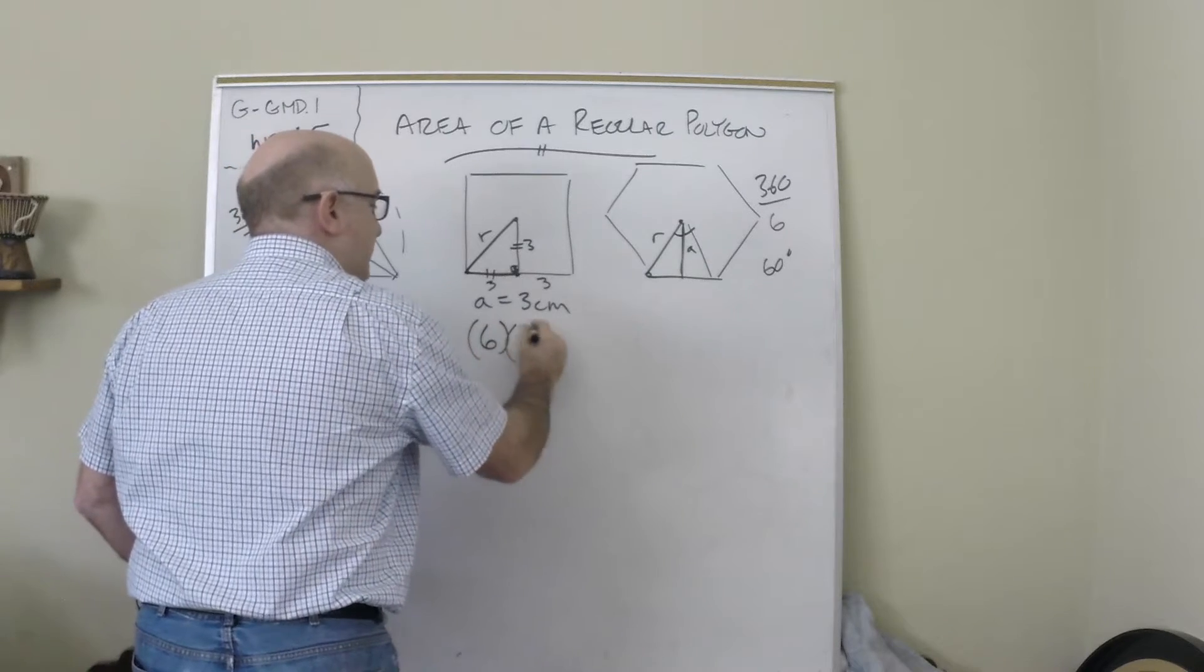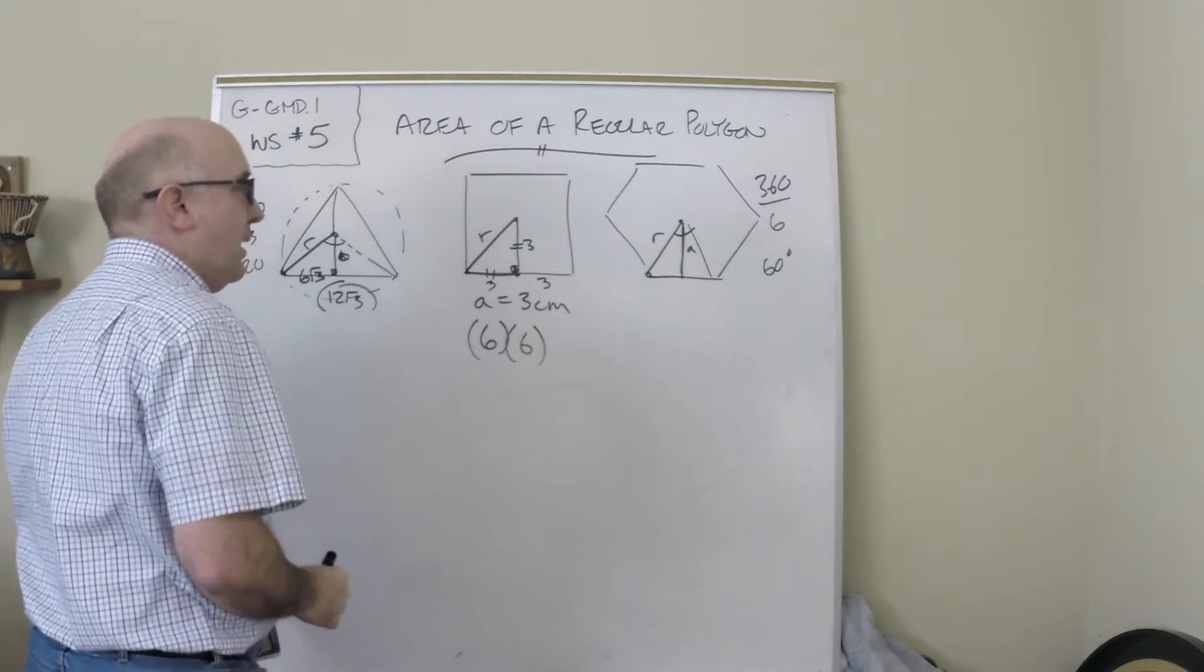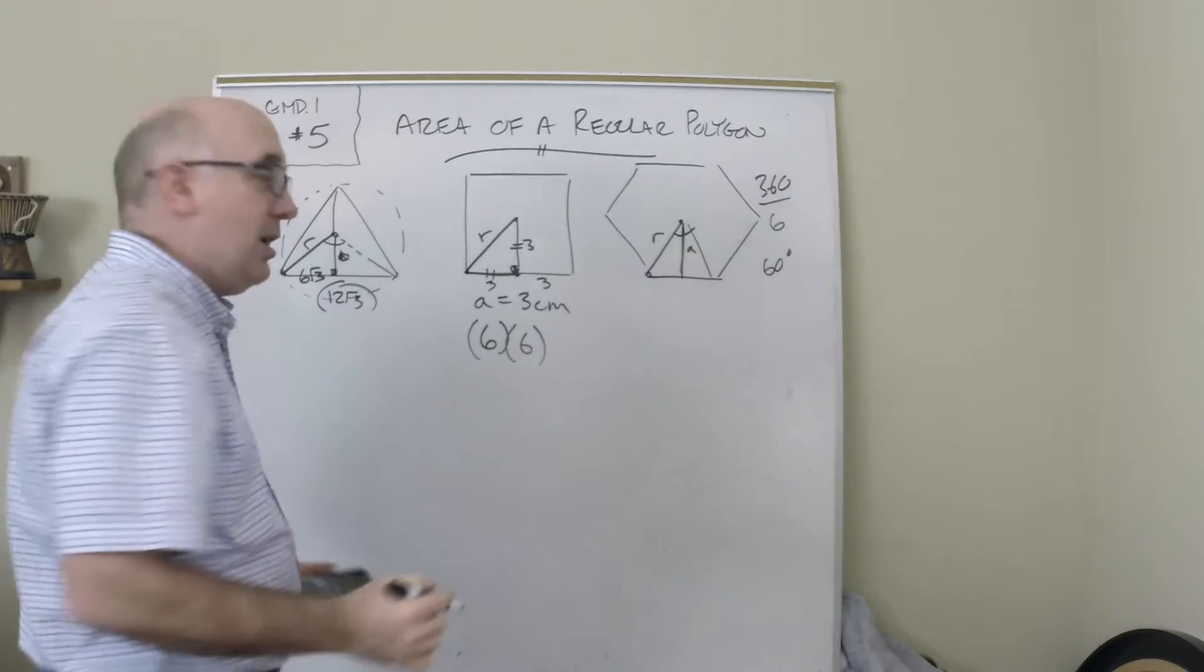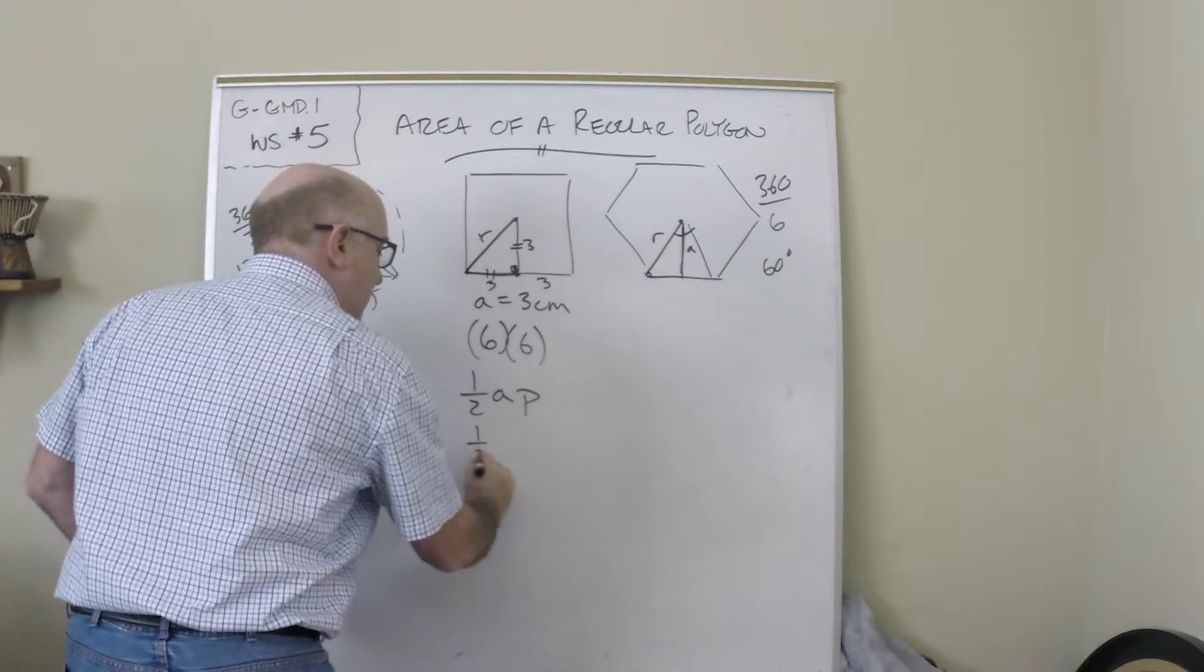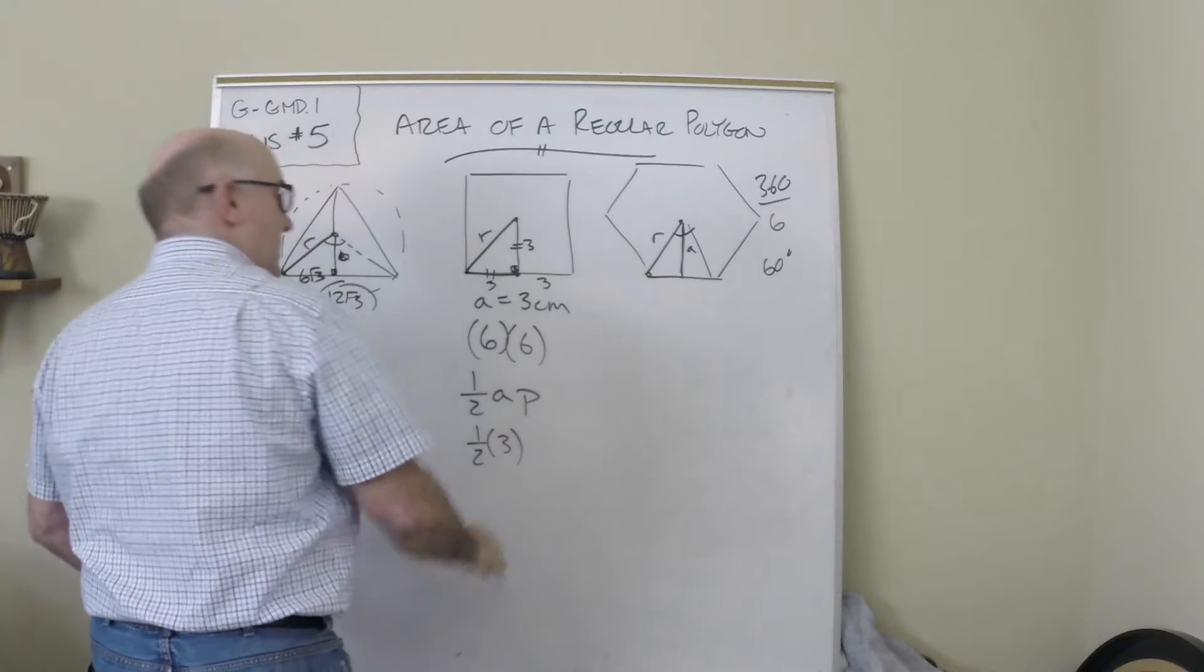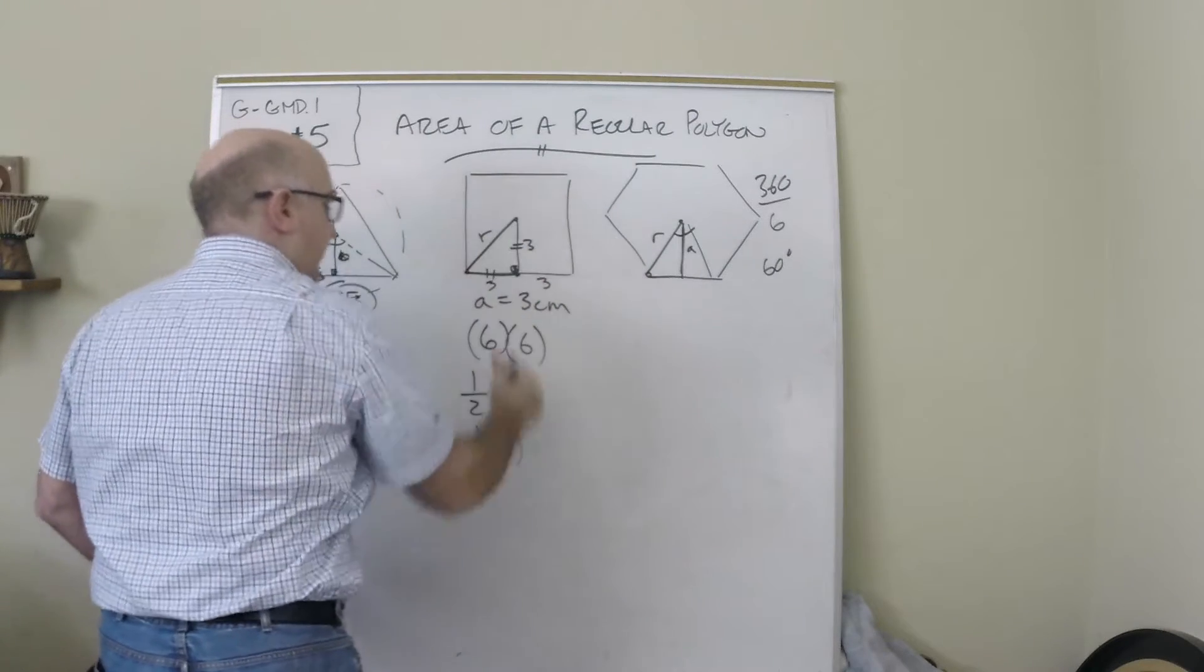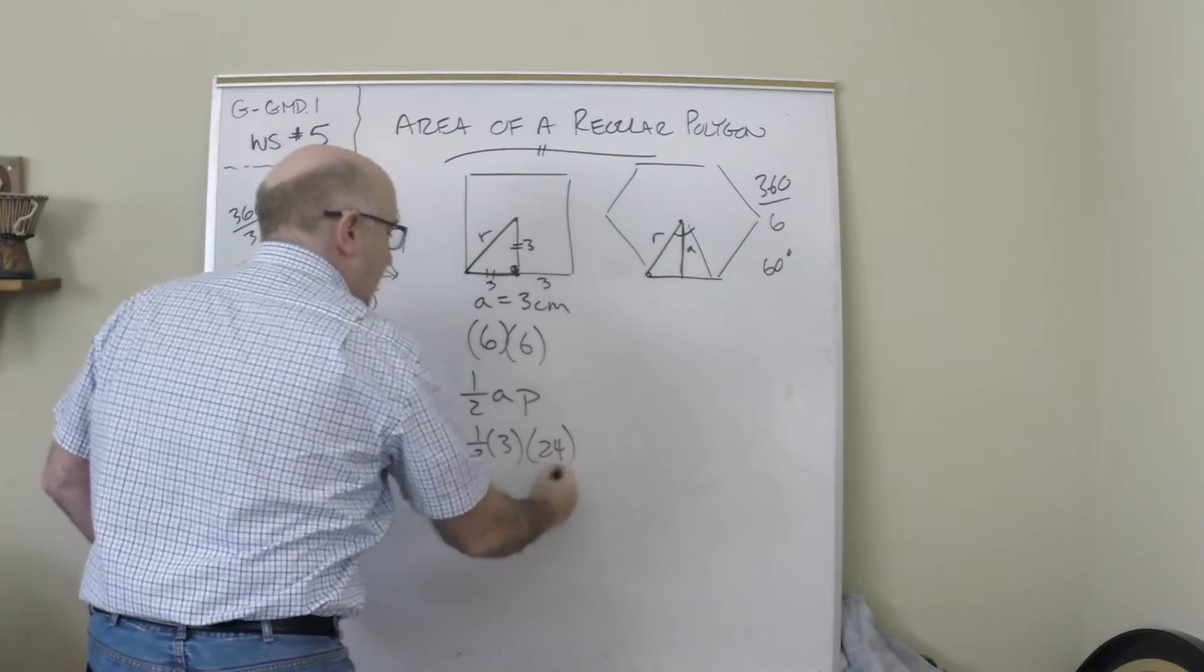But we can use our other formula, which is one-half the apothem times the perimeter. The apothem is 3, the perimeter would be 6 times 4 for 24, and if you multiply that together you get 12 times 3 for 36 as well.